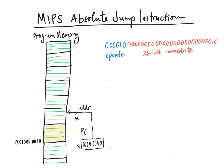In this case, the 26-bit immediate is telling us where we want to jump to. In other words, the PC that we fetch after we fetch this instruction is not just going to be PC plus 4, it's actually going to be the address indicated inside of this absolute jump instruction.